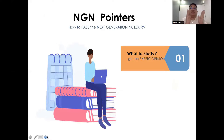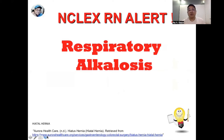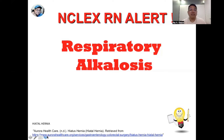To answer the number one question — what do I need to study when preparing for the NCLEX — my first pick is respiratory alkalosis. Respiratory alkalosis is a form of acid-base imbalance characterized by an elevated pH. The normal pH of the blood is 7.35 to 7.45, and in respiratory alkalosis the pH is more than 7.45. This is accompanied by a decrease in arterial carbon dioxide levels; the normal CO2 is 35 to 45, and in respiratory alkalosis CO2 will be less than 35.